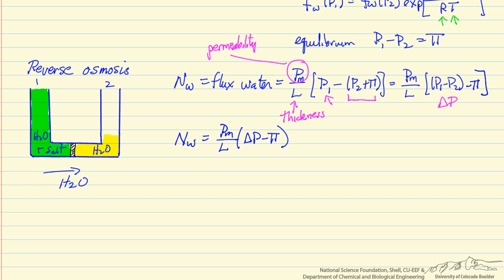Here is the equation for the water flux: higher pressure on the feed side causes water to permeate through. Because we may not have a perfect membrane, there could be a small amount of salt, so we also look at the flux of salt, which is related to the diffusivity of the salt in the membrane divided by the membrane thickness, multiplied by the concentration difference of salt across the membrane surfaces — the concentration just inside the membrane on side 1 and on side 2.